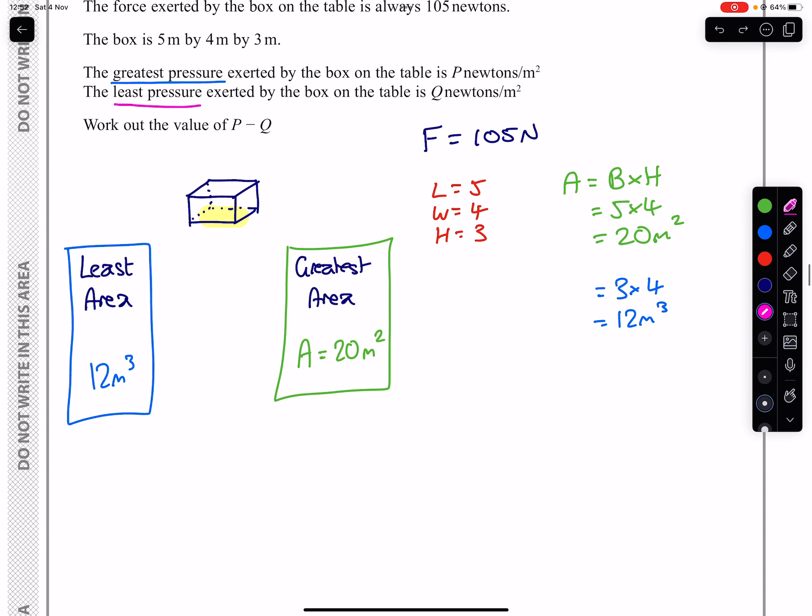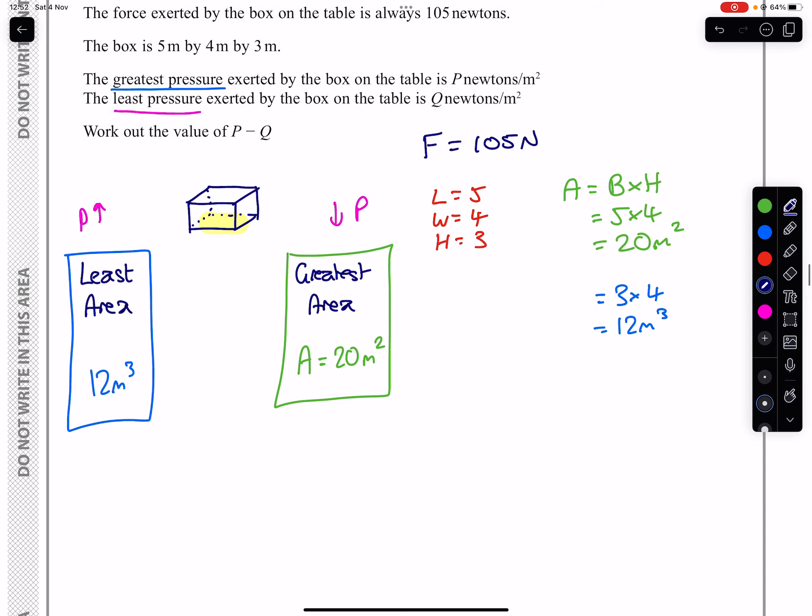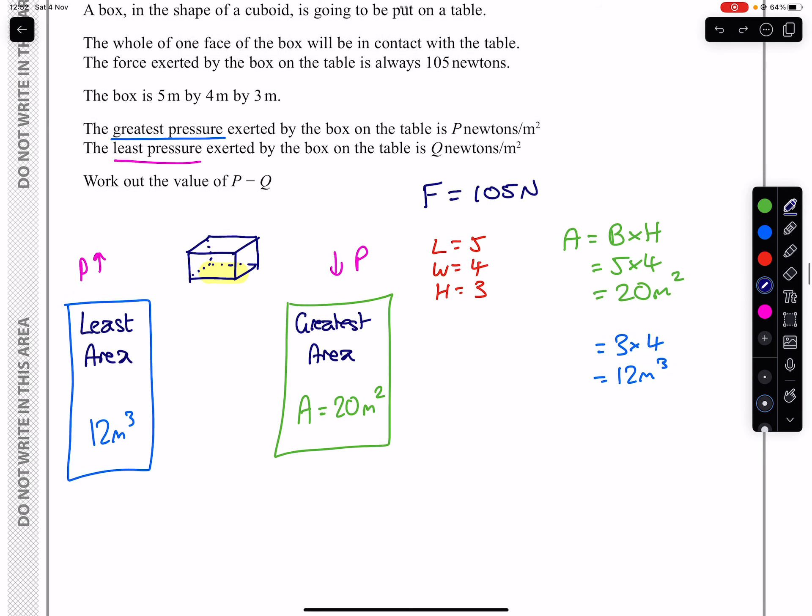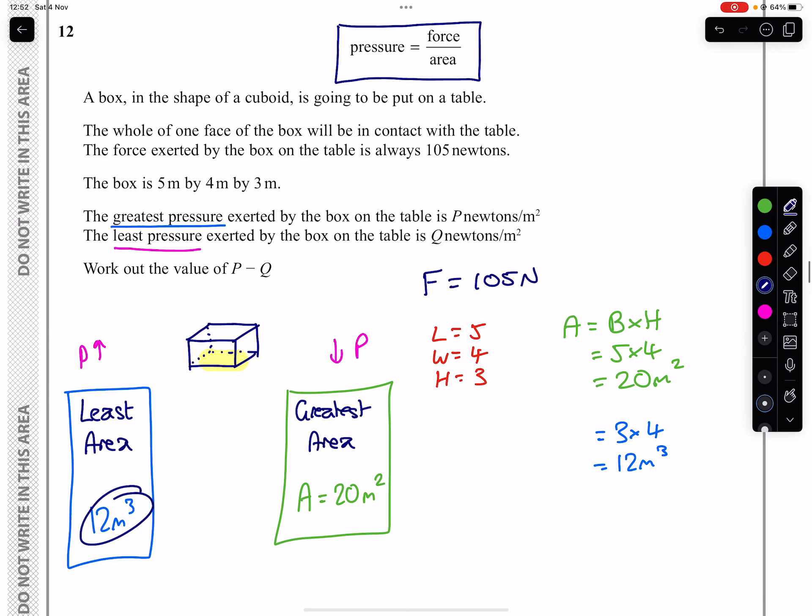So like I mentioned before, when you have a smaller area, you're going to have the bigger pressure. And when you have a bigger area, you're going to have a smaller pressure. But you don't need to take my word for it because we're going to actually figure out what these values are for P and Q, and you'll be able to see for yourself that this value gives us the biggest pressure and this value gives us the smallest pressure.